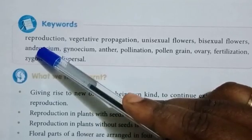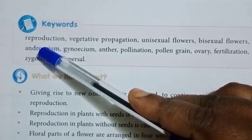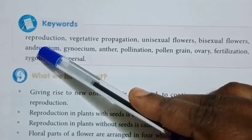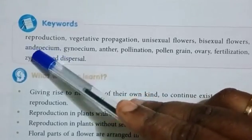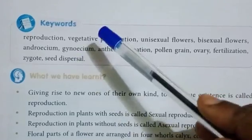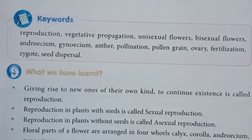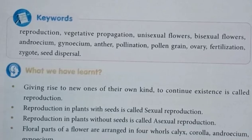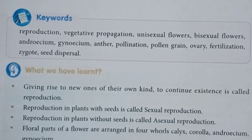The female reproductive parts are called gynoseum. The gynoseum consists of a bulb-like structure called the ovary, which continues into a fine tube-like structure called the style, with a slimy beard-like stigma at the top.